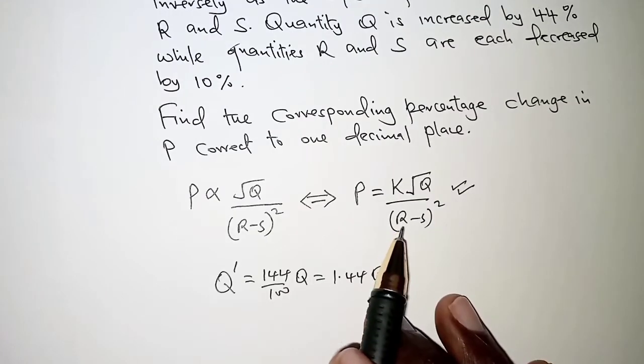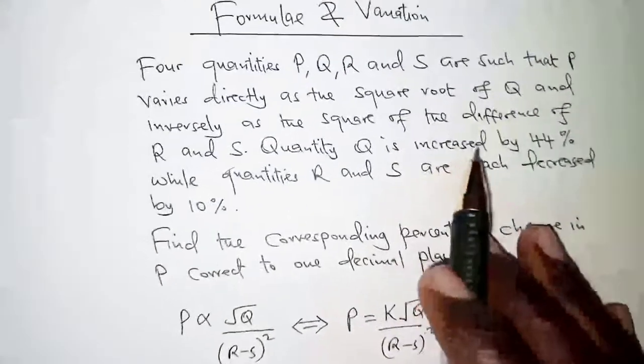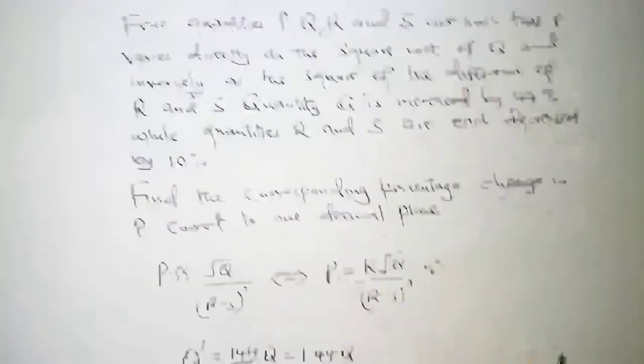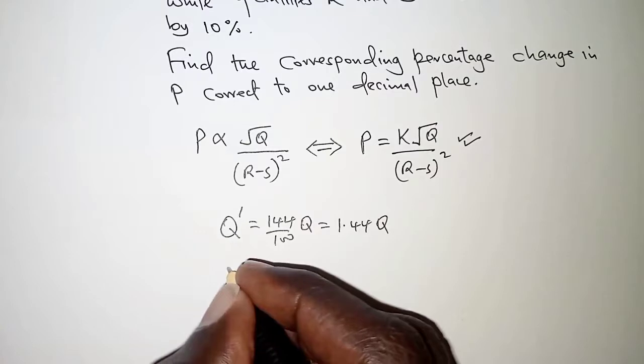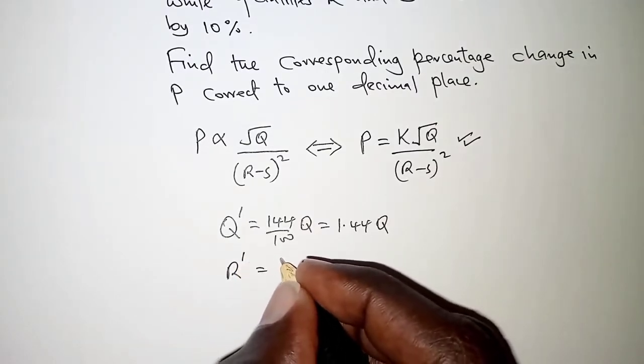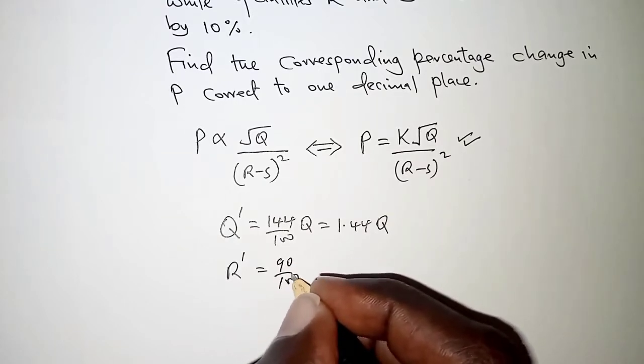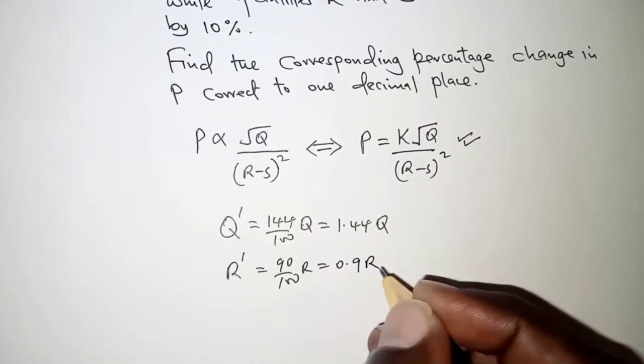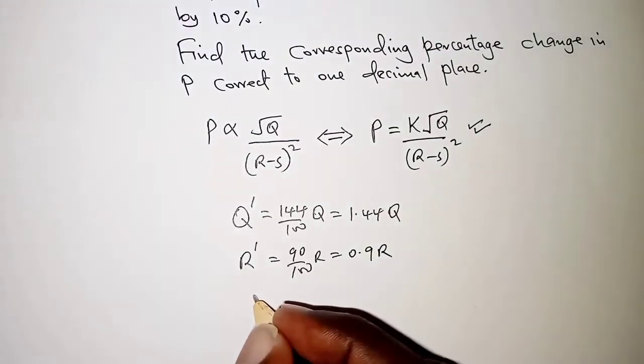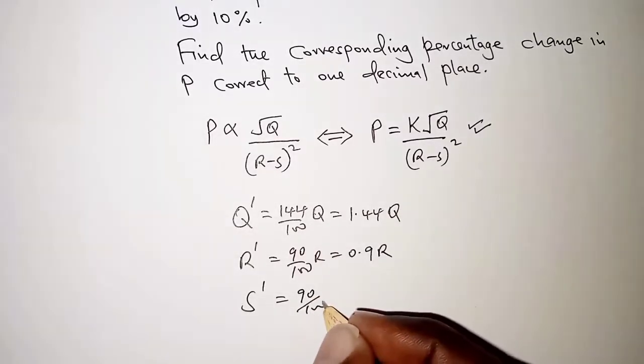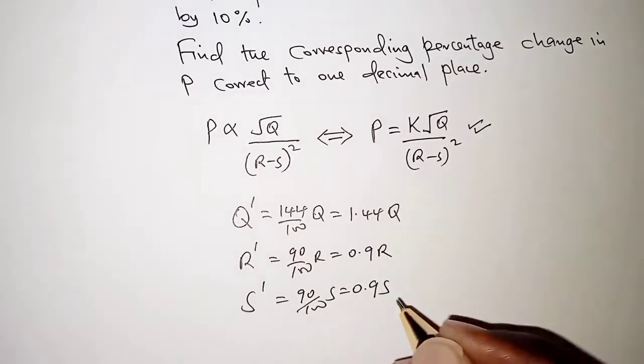And we are told that both R and S are decreased by 10%. So R and S are each decreased by 10%. That means the new value of R becomes 100 minus 10 which is 90, so 90 over 100 R, which is just 0.9 R. The same applies for S. So S prime is 90 over 100 S, which is just 0.9 S.